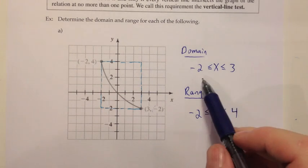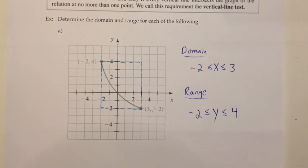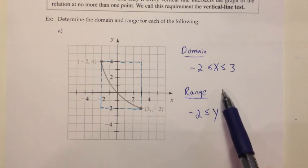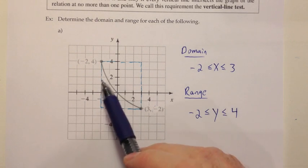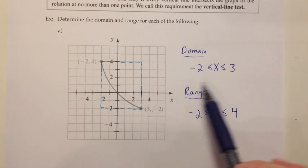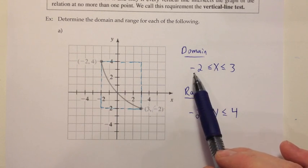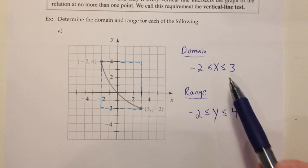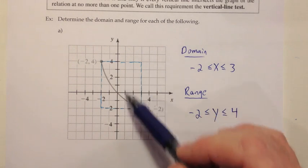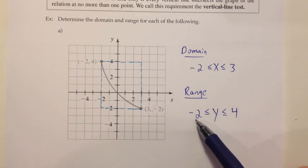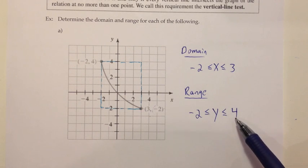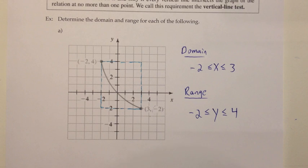This is how they'll ask you to write domain and range — using inequality notation. When you have a left and a right bound, put x in the middle. When you have a top and a bottom bound, put y in the middle. That's the idea of domain and range, and we'll look at a few more examples on the next page.